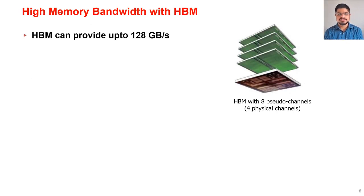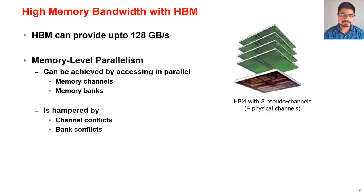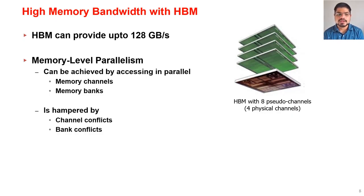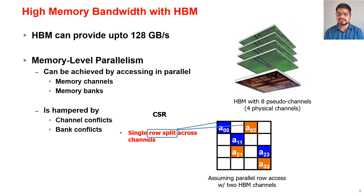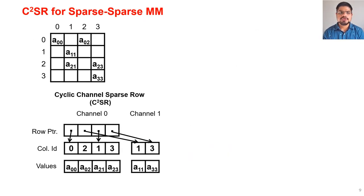Modern 3D stacked memory technologies such as HBM can provide memory bandwidth of up to 128 Gbps with eight channels. However, to achieve this bandwidth we need to exploit memory-level parallelism by accessing different memory channels and banks in parallel, which is hampered by bank and channel conflicts. In CSR, a single row is split across different channels, so row parallelization incurs channel conflicts. To solve these issues we propose a new sparse storage format called Cyclic Channel Sparse Row, or C²SR.